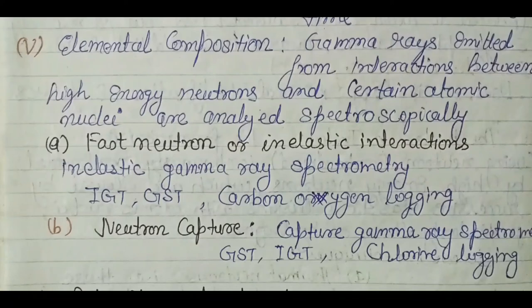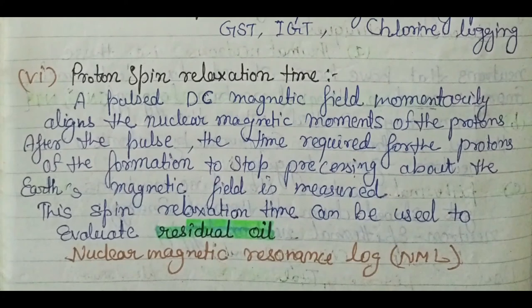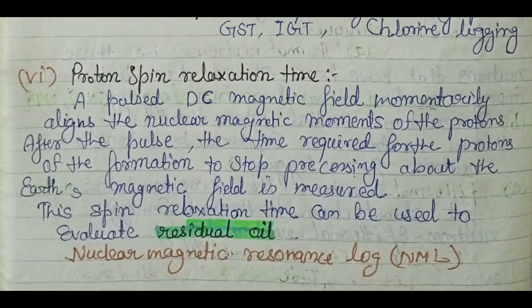Next is the nuclear magnetic log. A magnetic field aligns the nuclear magnetic moments of the protons, and after the field is removed, the time required for the protons in the formation to stop precessing about the Earth's magnetic field is measured as the relaxation time. This relaxation time is highly important, and one of the most important applications of nuclear magnetic log is the evaluation of residual oil.